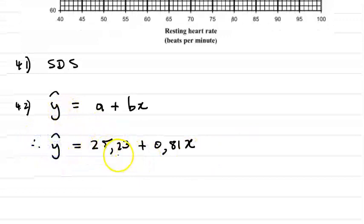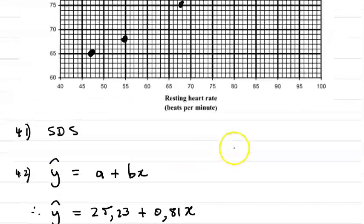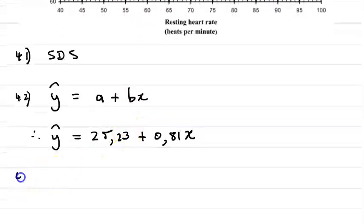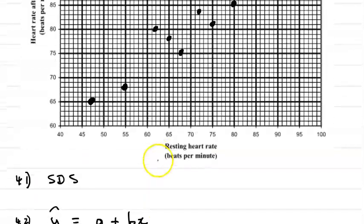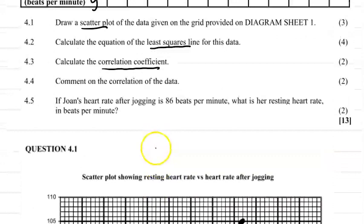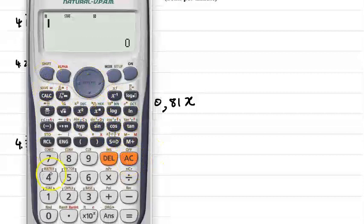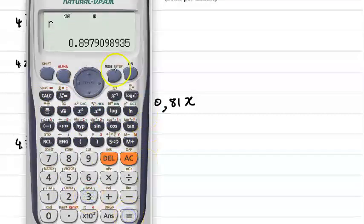Let's go look at the next question. It says calculate the correlation coefficient 4.3. Now the correlation coefficient tells us the strength of the relationship between the x and the y values. So once again AC shift and 1 5 for regression and r is the correlation coefficient. So 3 equal to, so that's 0.897.